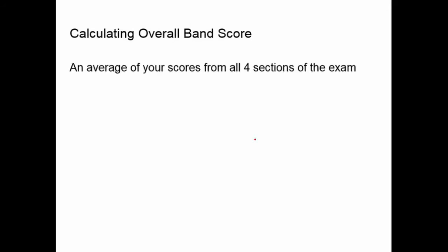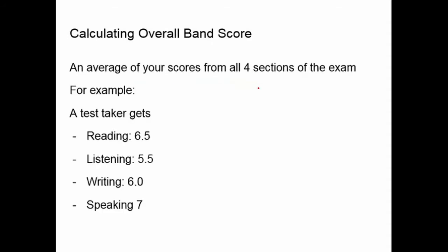How is band score calculated? The overall band score is just an average of your scores from all four sections of the exam. For example, if a student gets a 6.5 in reading, 5.5 in listening, 6 in writing, and a 7 in speaking, you would add all of these up and divide by 4, getting 6.25.